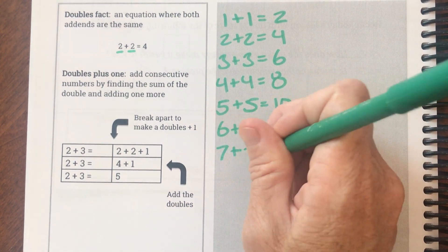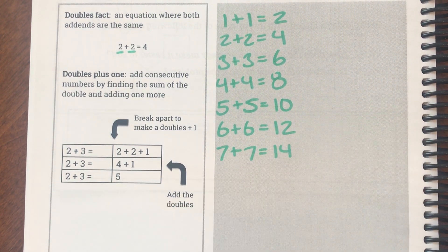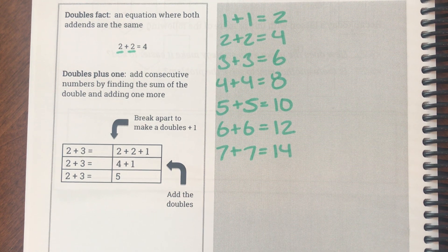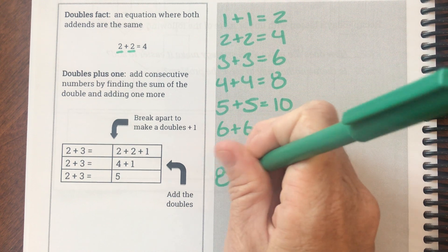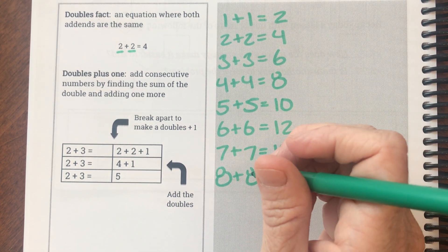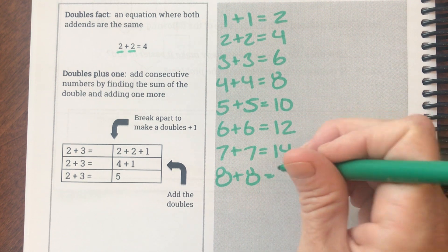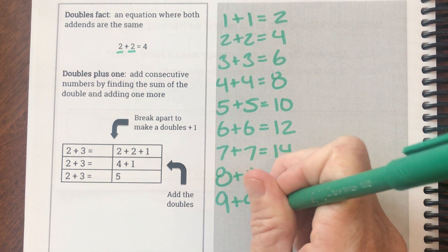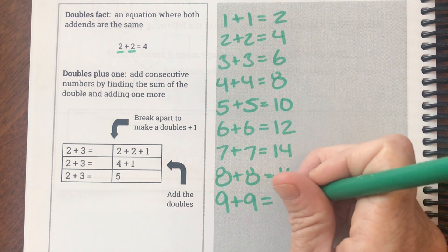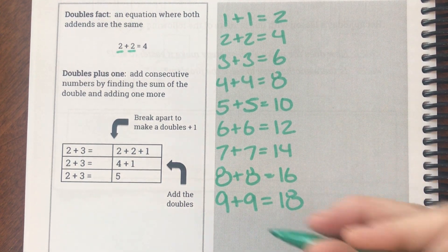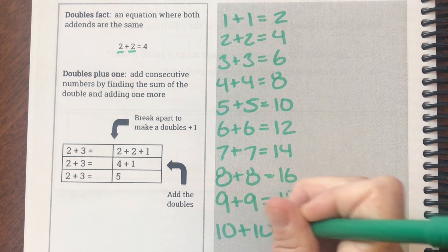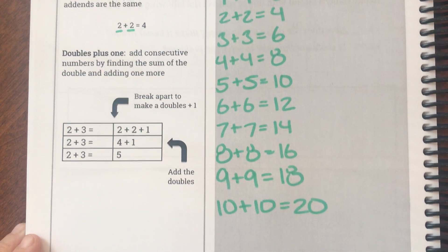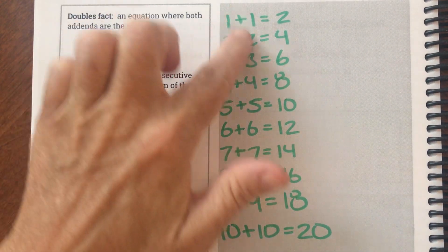Seven plus seven would be fourteen. We're getting pretty high into these doubles right now — it's getting harder. We could even do eight plus eight, which would be sixteen. We can do nine plus nine — that's an even larger one — nine plus nine is eighteen. And then our last one: ten plus ten is twenty. Okay, those are called our doubles.